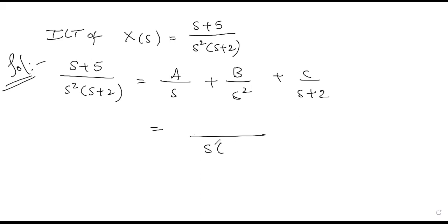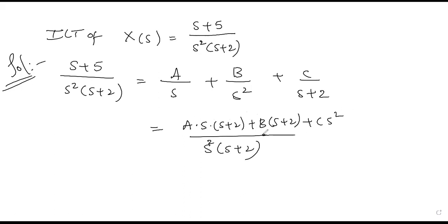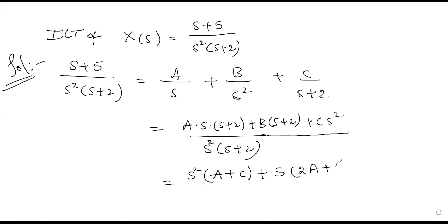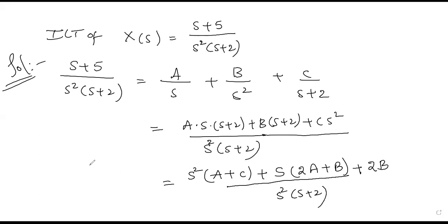Taking LCM on the right-hand side, S²·(S+2) is the LCM, giving numerator: A·S·(S+2) + B·(S+2) + C·S². Comparing S² coefficients gives A + C. Comparing S coefficients gives 2A + B. The constant term gives 2B. You can use the comparison of numerator coefficients or the shortcut method to find A, B, and C values.